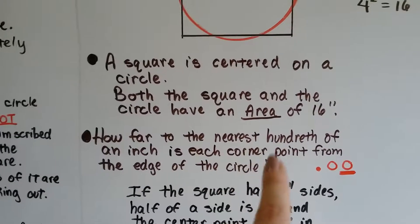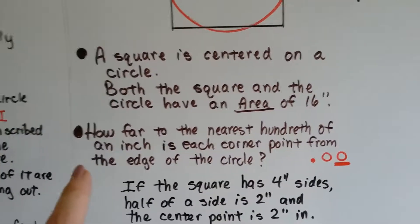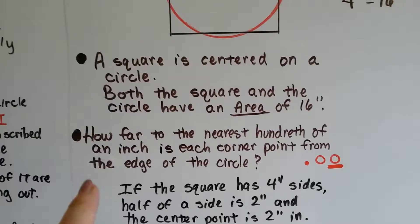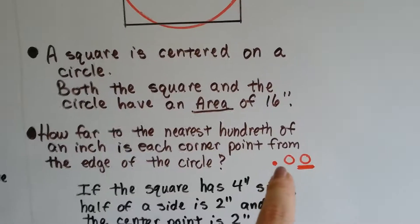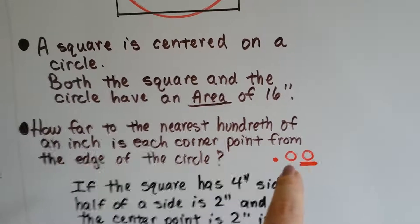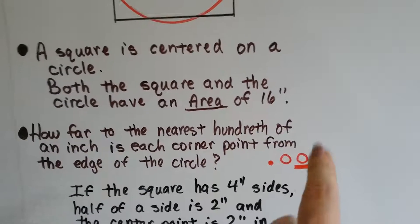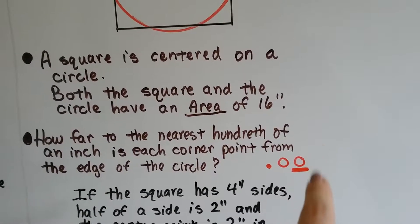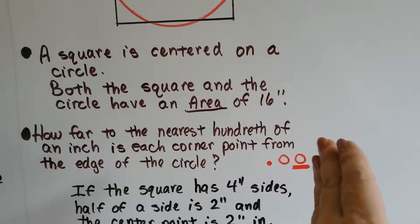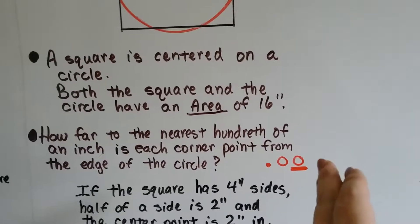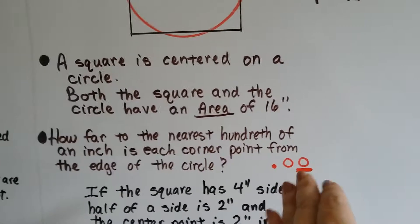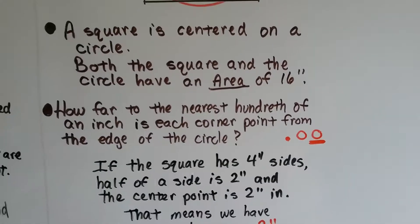We want to find out how far to the nearest hundredth of an inch is each corner point from the edge of the circle. Now remember, hundredths on the other side of the decimal point, that's tenths and that's hundredths. So if you end up going any farther past two places past this decimal point, you're going to be doing a lot of extra work you don't need to do.